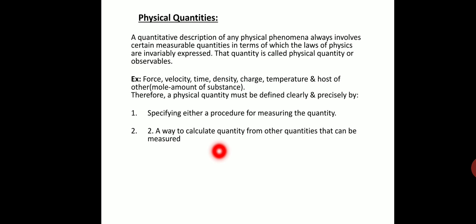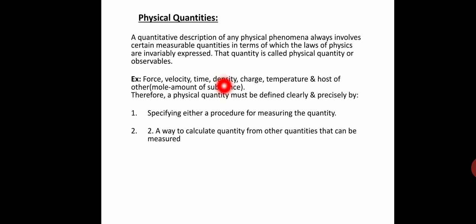Examples of physical quantities include force, velocity — as I said, 60 kilometers per hour is speed, but velocity is measured in kilometer per hour, meter per second, etc. Time is also a physical quantity. Density is mass per unit volume. Mass is the amount of matter content in a body. Temperature is also a physical quantity.